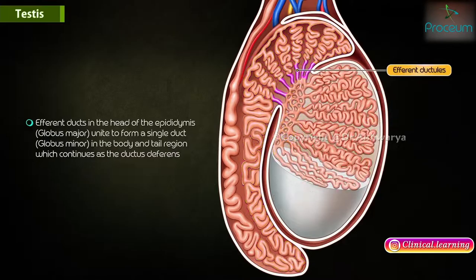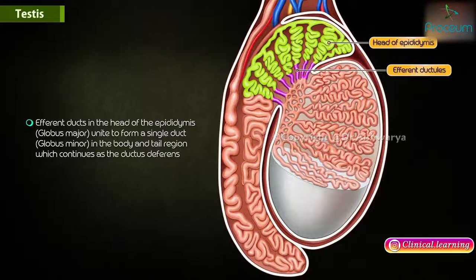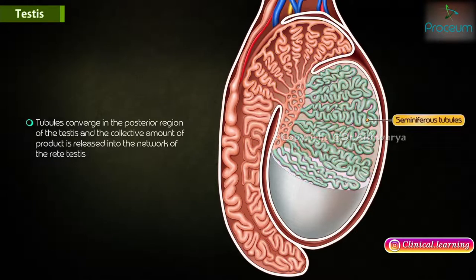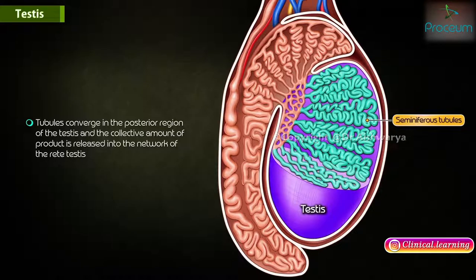Efferent ductules in the head of the epididymis, or globus major, unite to form a single duct — the globus minor — in the body and tail region, which continues as the ductus deferens, also known as the vas deferens. The tubules converge in the posterior region of the testis, and the collective product is released into the network of the rete testis.